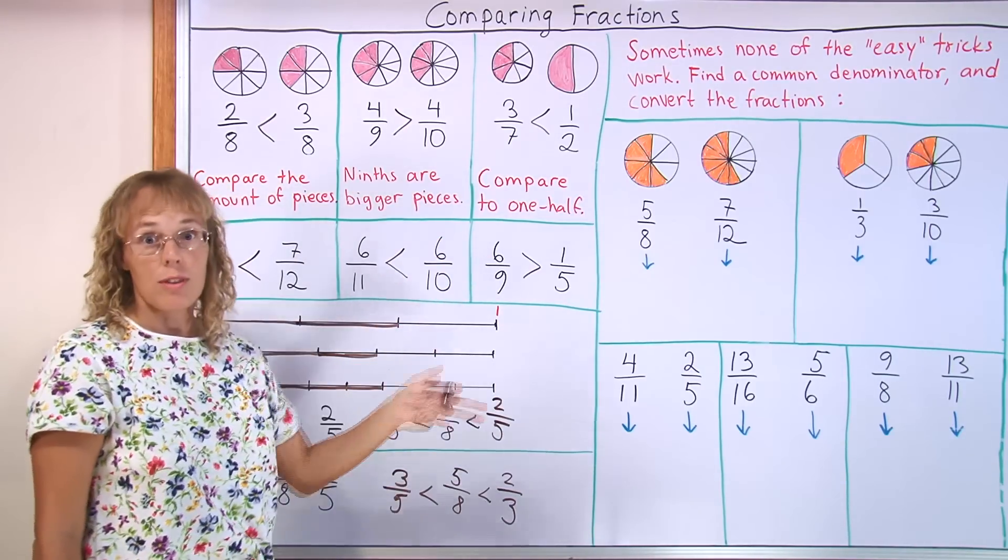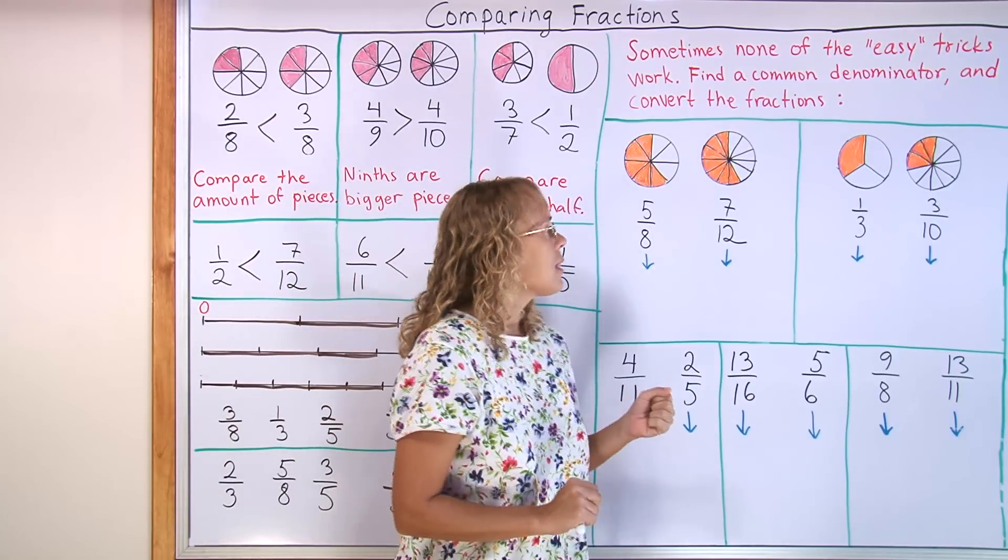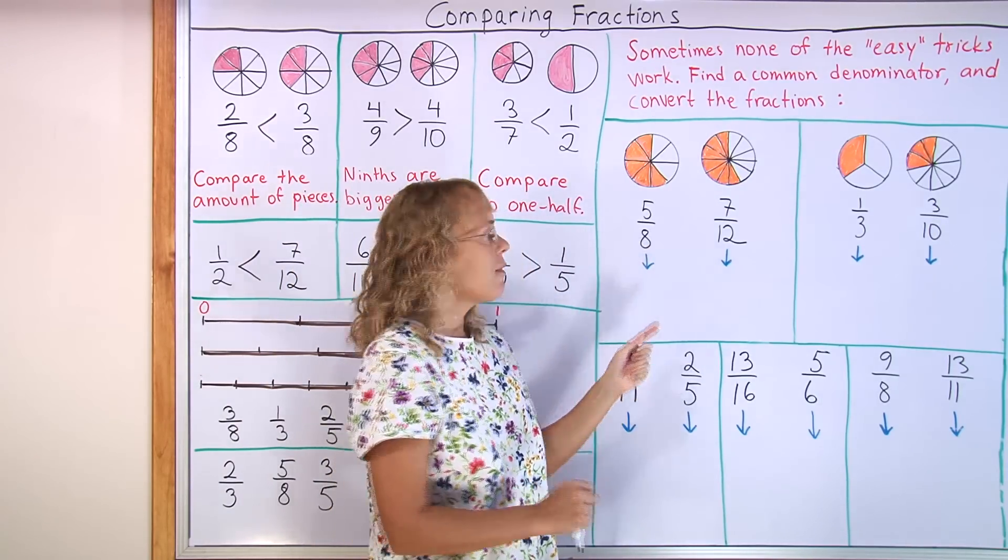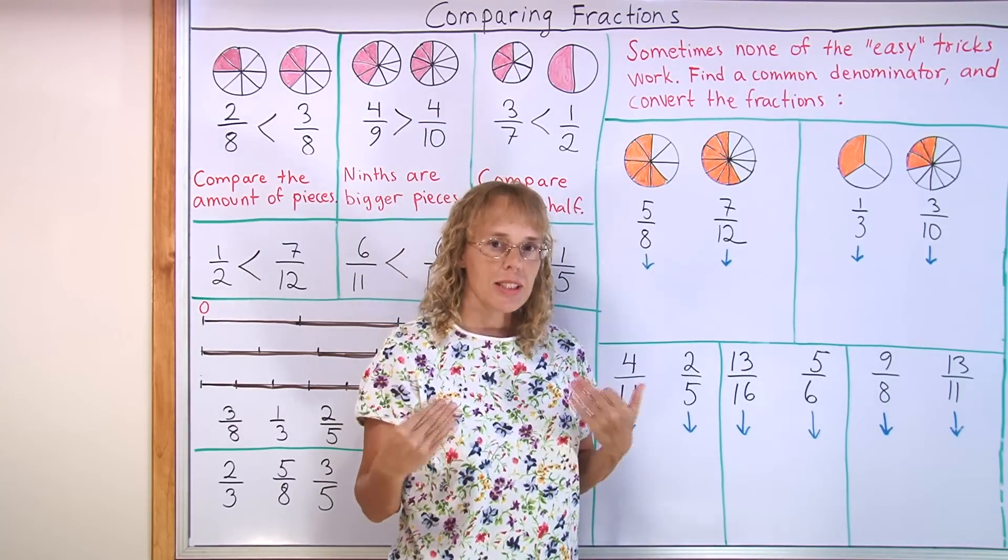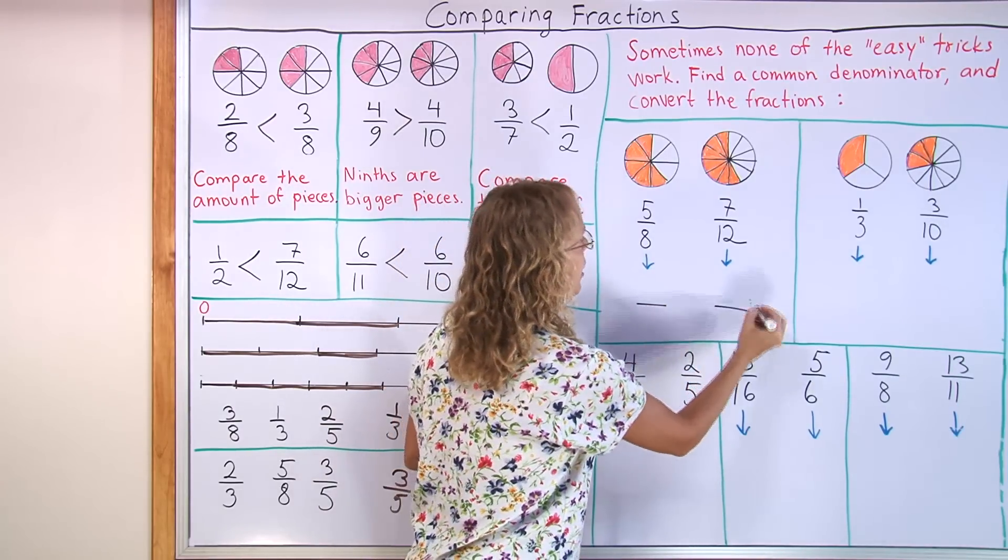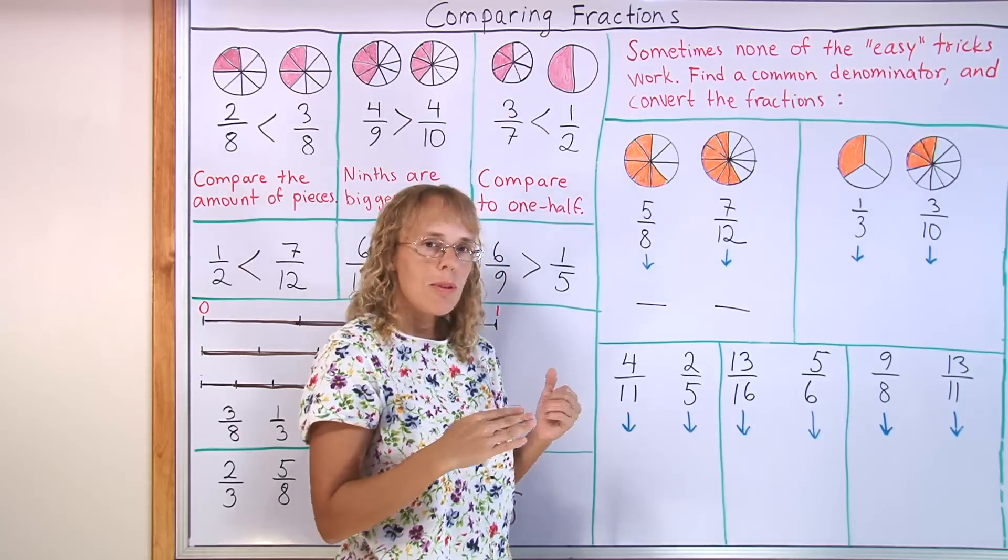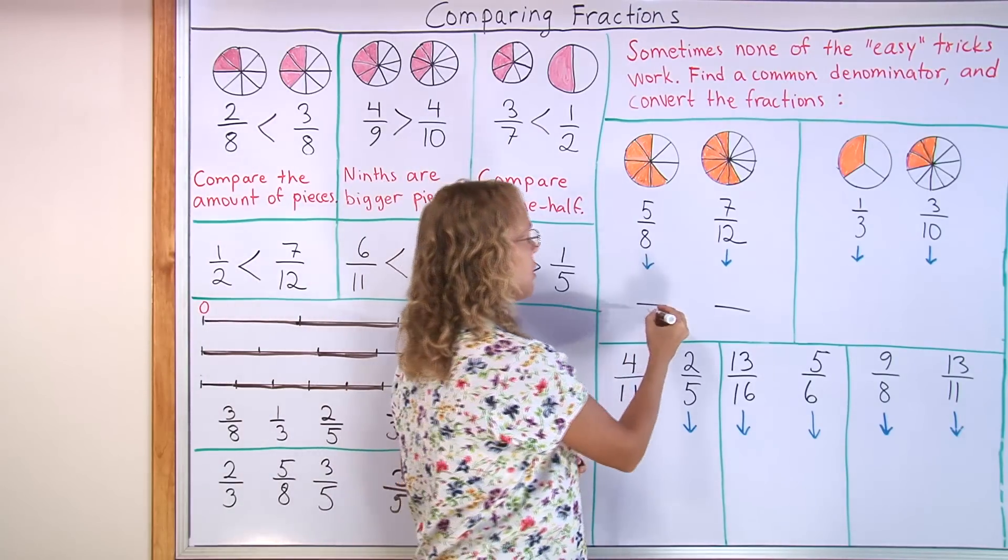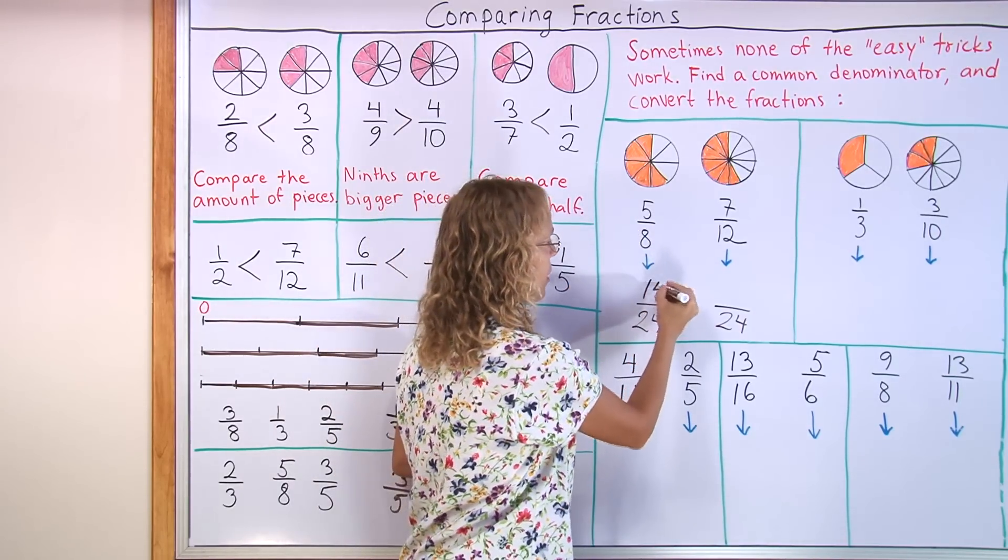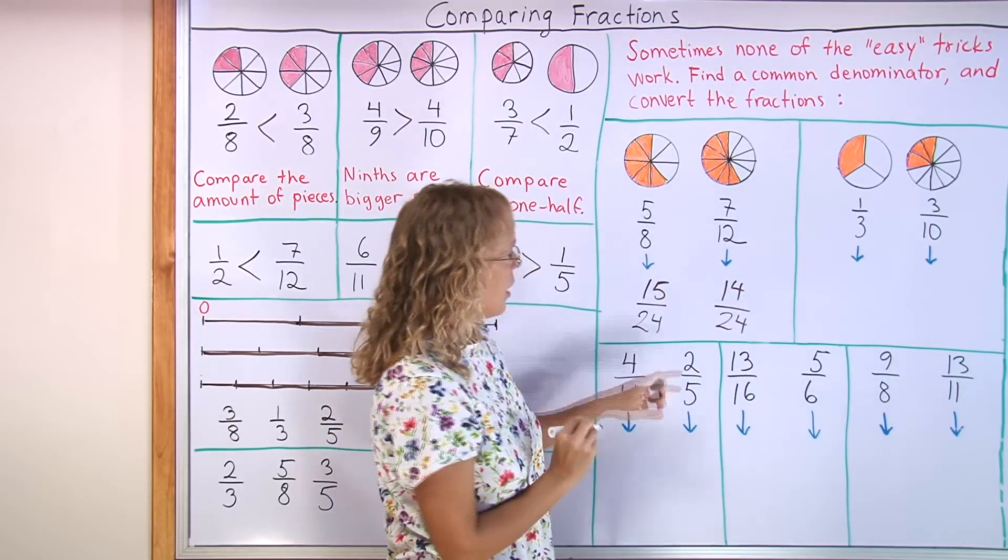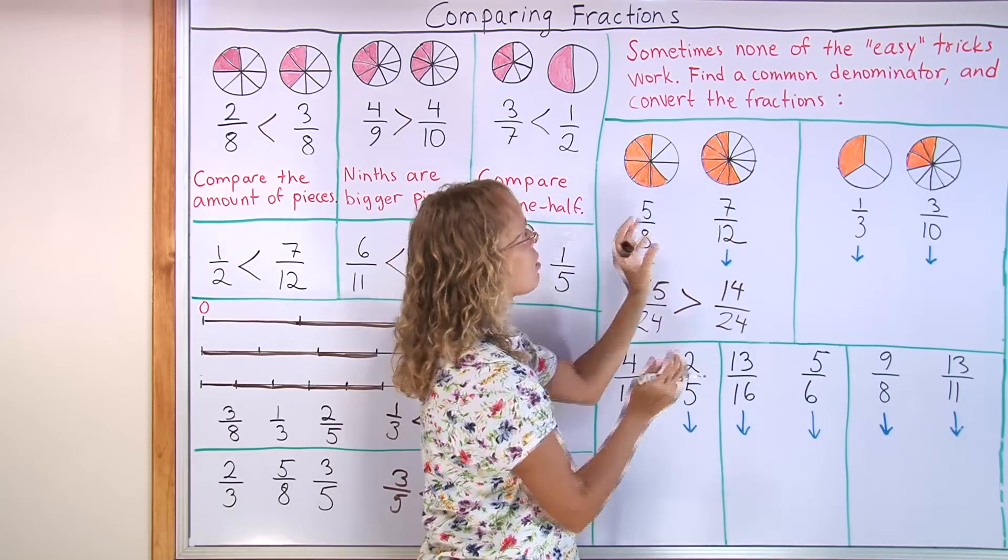Now, sometimes none of these easy tricks work for comparing fractions. But then we still have one more method to use. And that takes the most work, but that always works. It is that we will convert these fractions to be compared so that they have the same denominator. And to do that, we need to find a common denominator. Just like when adding fractions. This is the same exact method. We find a common denominator. And for 8 and 12, I have to find a number so that 12 goes evenly into it and 8 goes evenly into it. A number that's in the multiplication table of 8 and in the multiplication table of 12. Now 24 works. And 8 times 3 is 24. So 5 times 3. Here 15. 12 times 2. 7 times 2. 14. And now I can compare 15 pieces is more than 14 pieces.